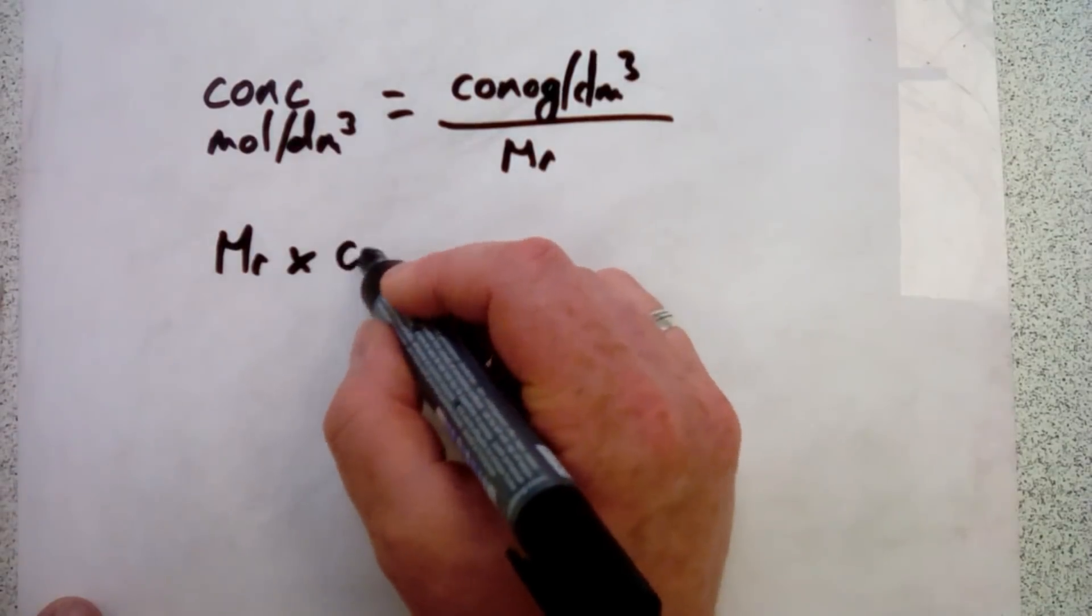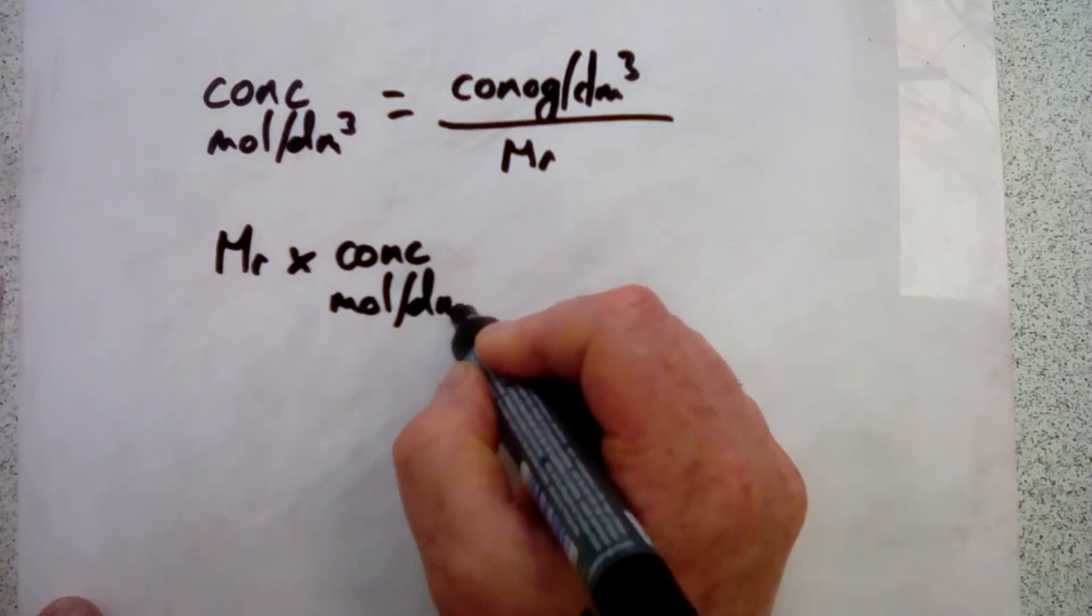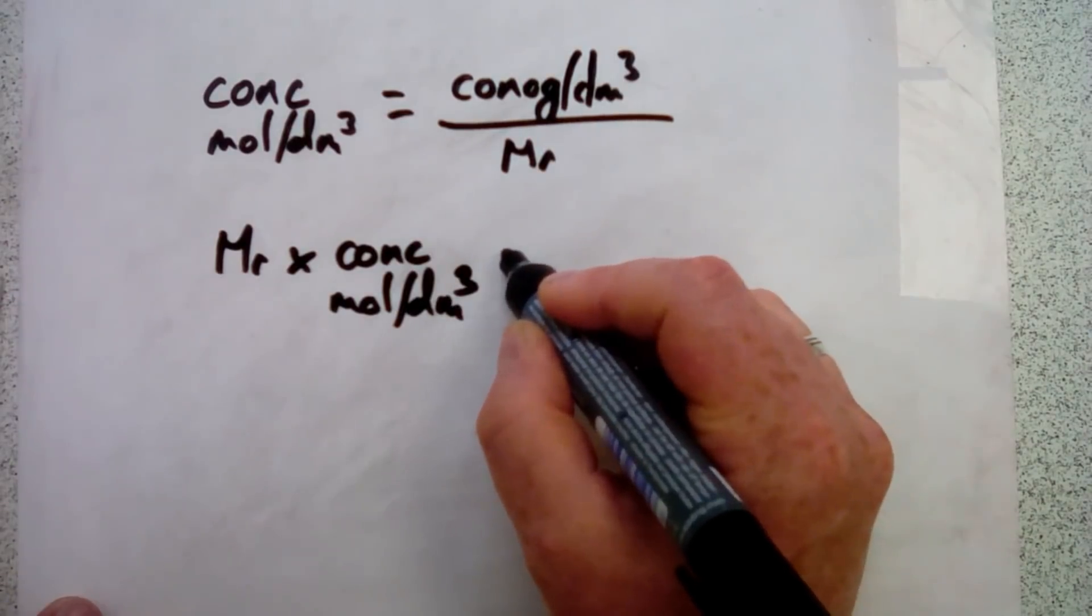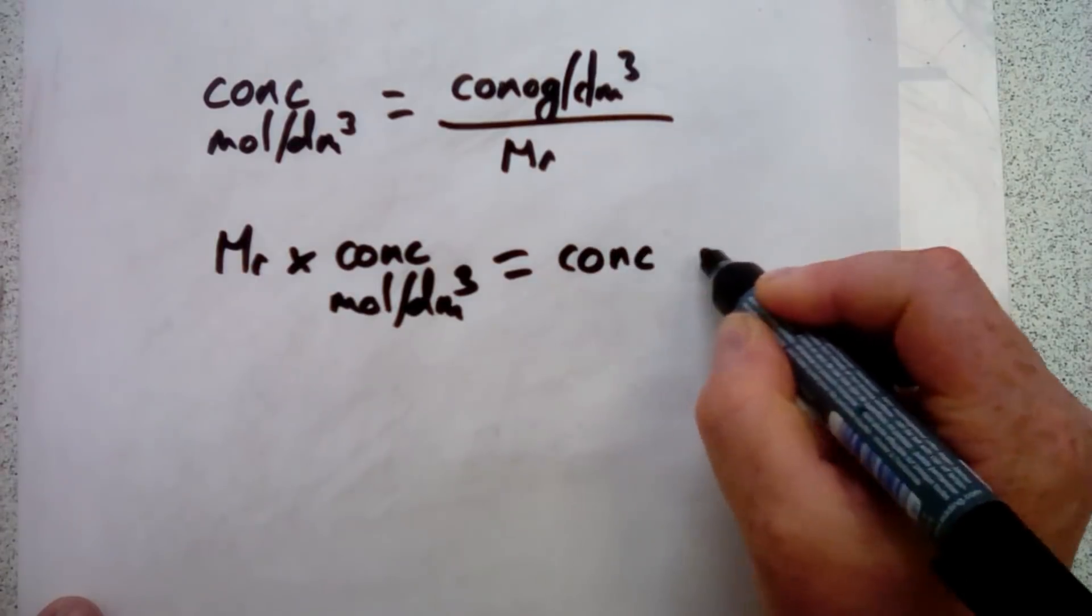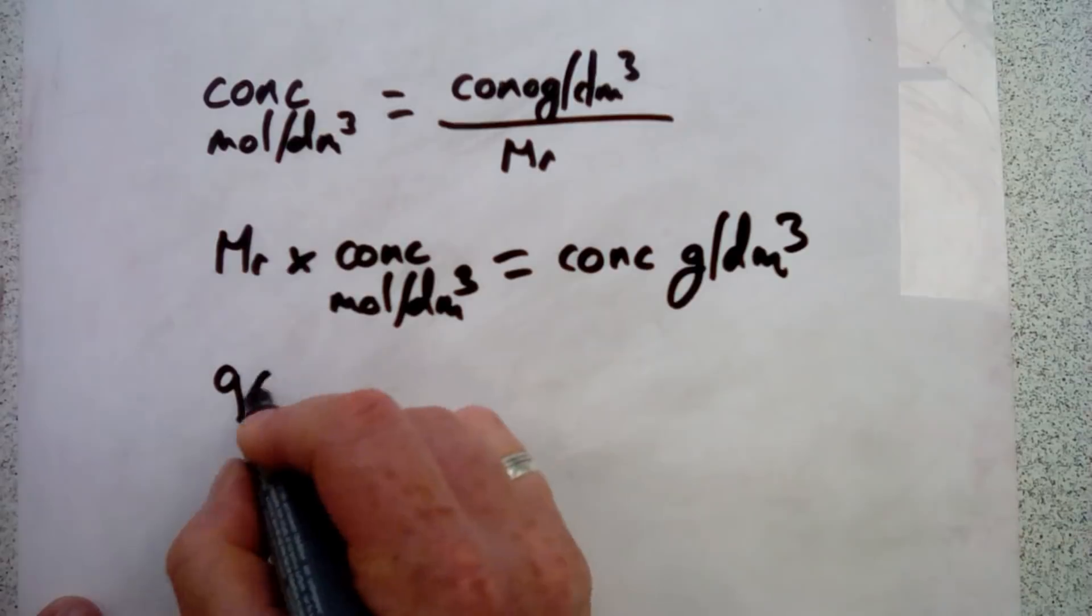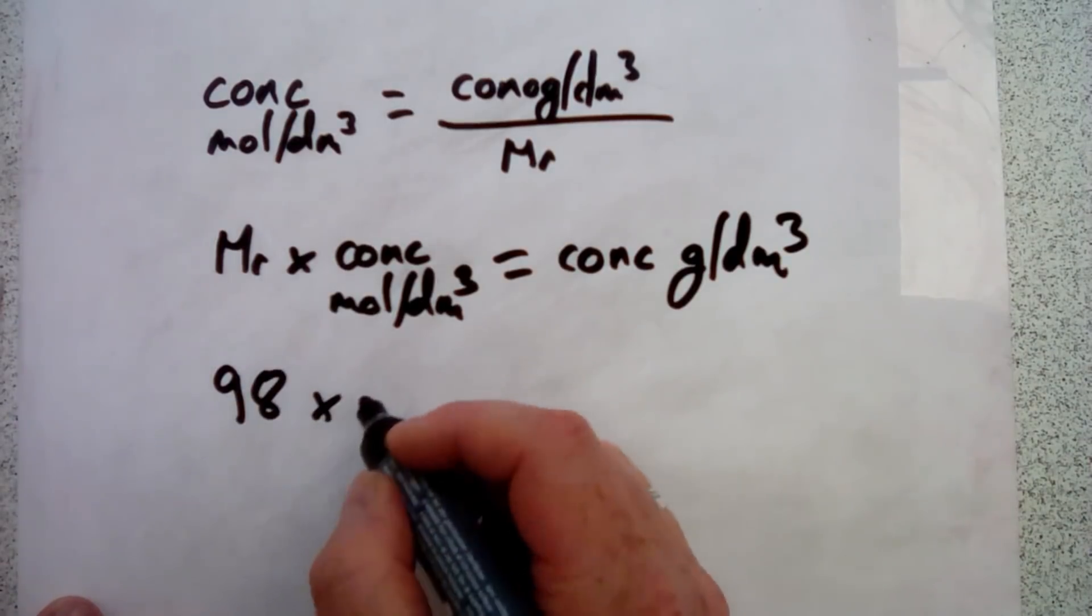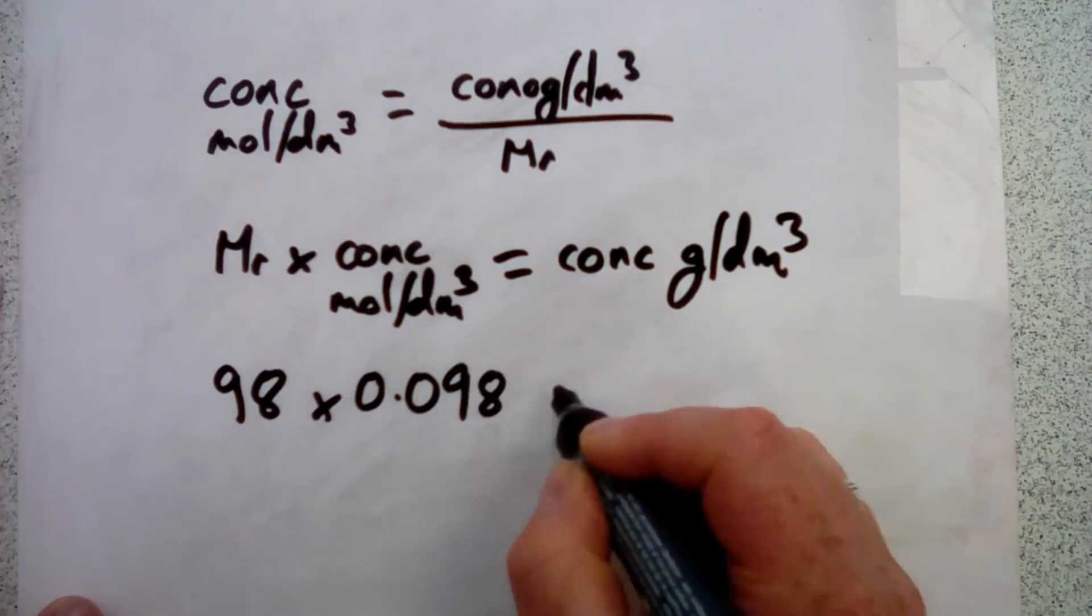Concentration in moles per decimeter cubed equals our concentration in grams per decimeter cubed divided by relative molecular mass. Relative molecular mass was 98. Our concentration in moles per decimeter cubed we worked out as 0.098.